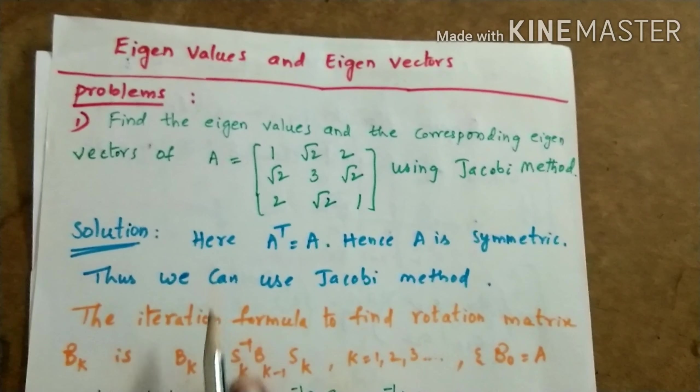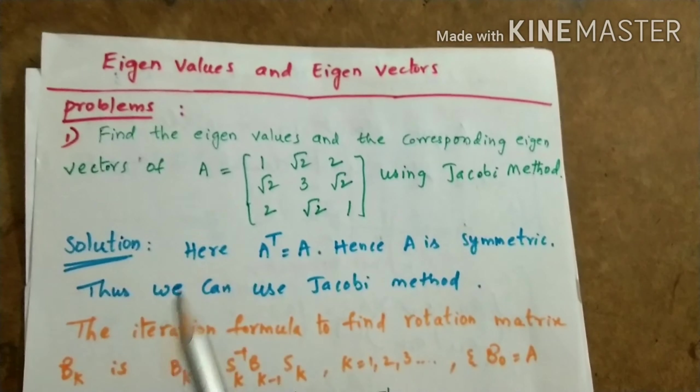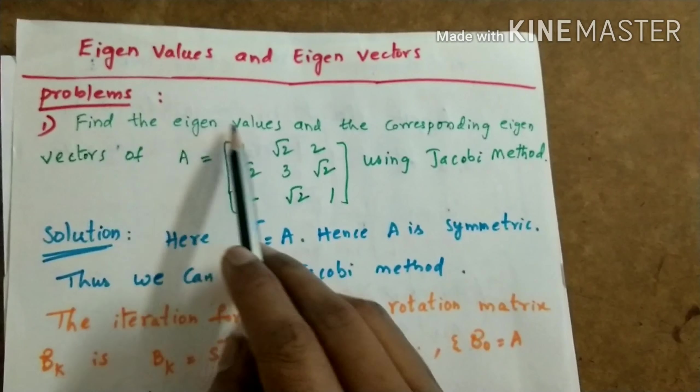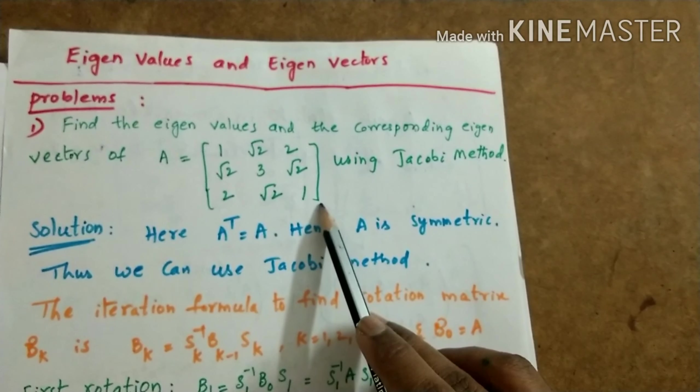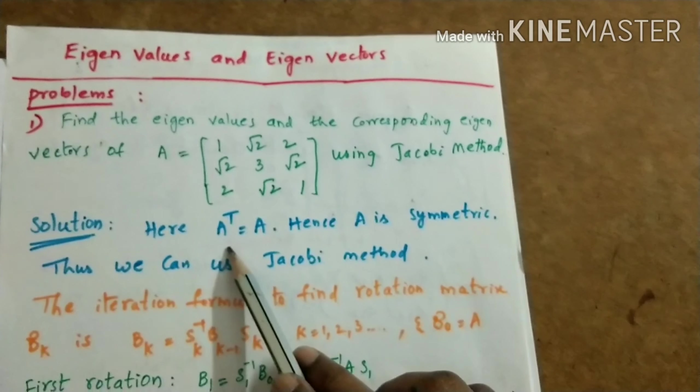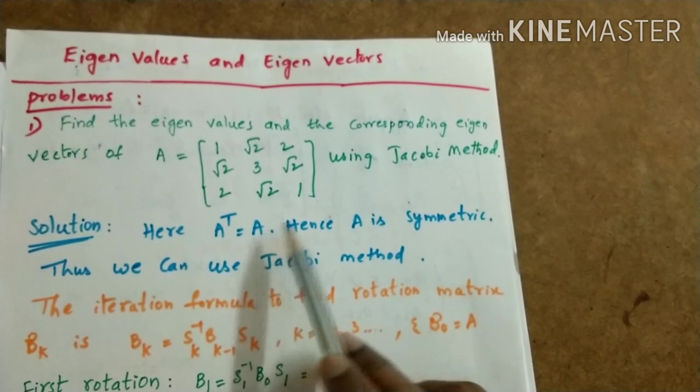Hello everyone, I am Rama. In this lecture I am going to give an example for how to use the Jacobi method to find the eigenvalues and the corresponding eigenvectors. Find the eigenvalues and the corresponding eigenvectors of A equal to the matrix [1, √2, 2; √2, 3, √2; 2, √2, 1] using the Jacobi method.